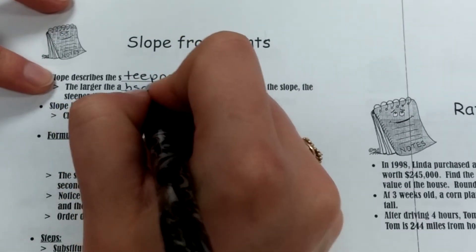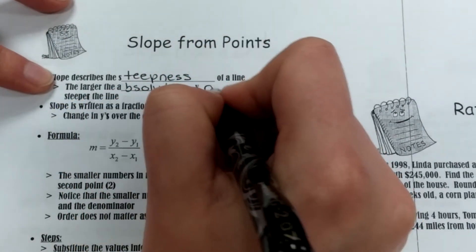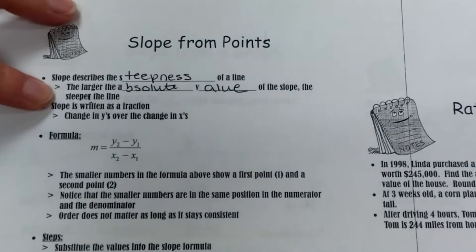So a quick review from last time: slope describes the steepness of a line. The larger the absolute value of the slope, the steeper the line is.